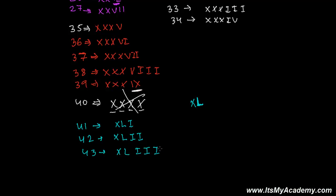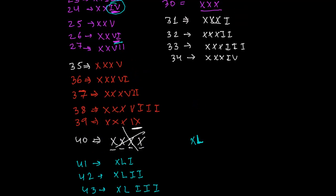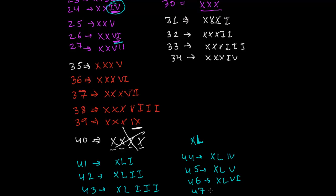For 43: XLIII. Since we cannot write four I's, for 44 we write XL (40) and then IV (4), giving XLIV. For 45, write XL then V: XLV. For 46, write XL then VI: XLVI. For 47, write XL then VII: XLVII.